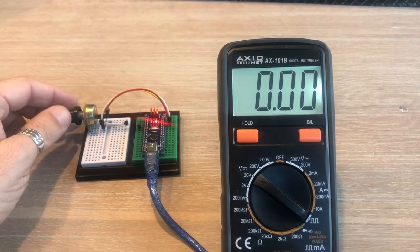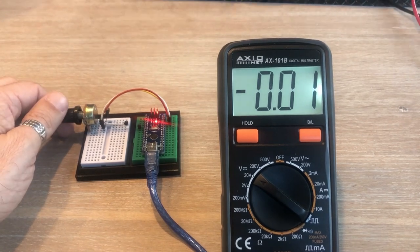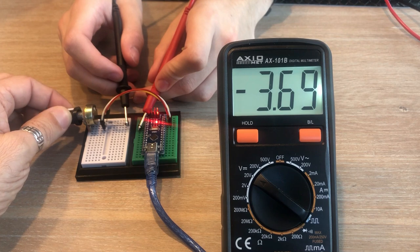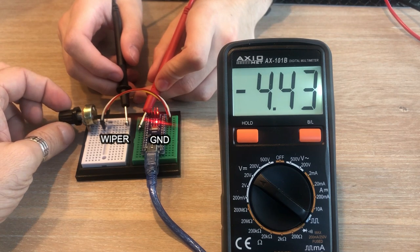Before we load the code let's measure the voltage between Arduino ground pin and pot's wiper pin. You can see that we oscillate between 0 and 5 volts.